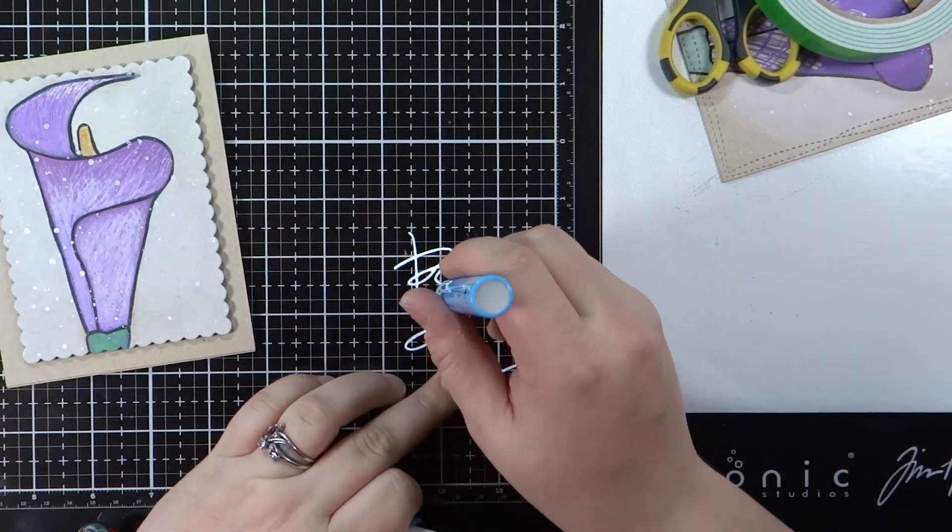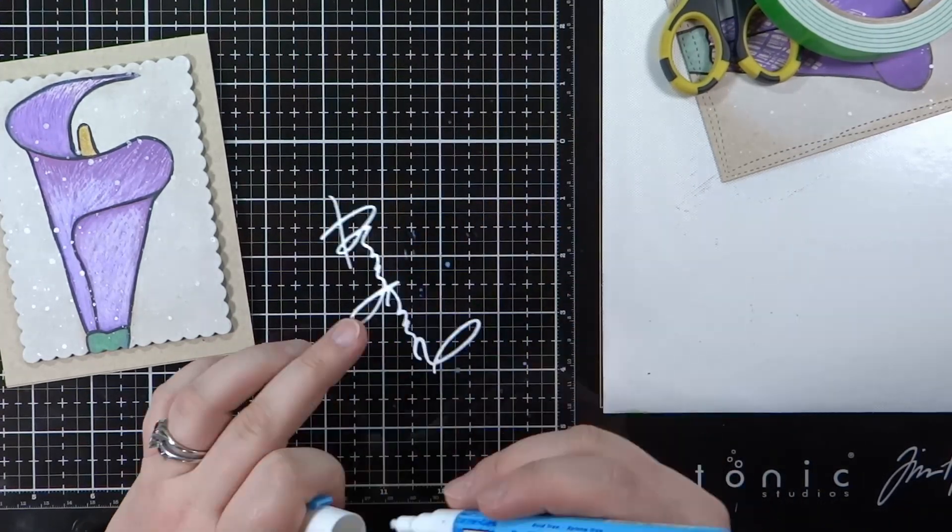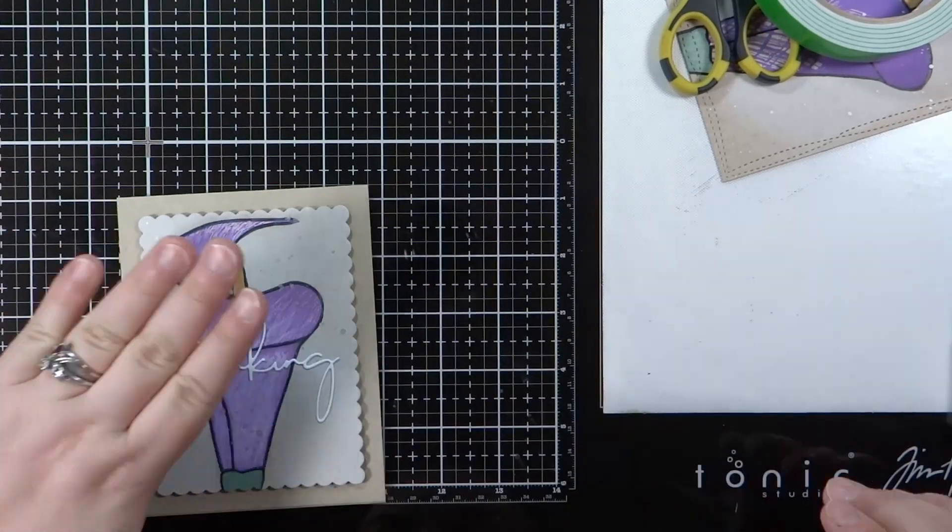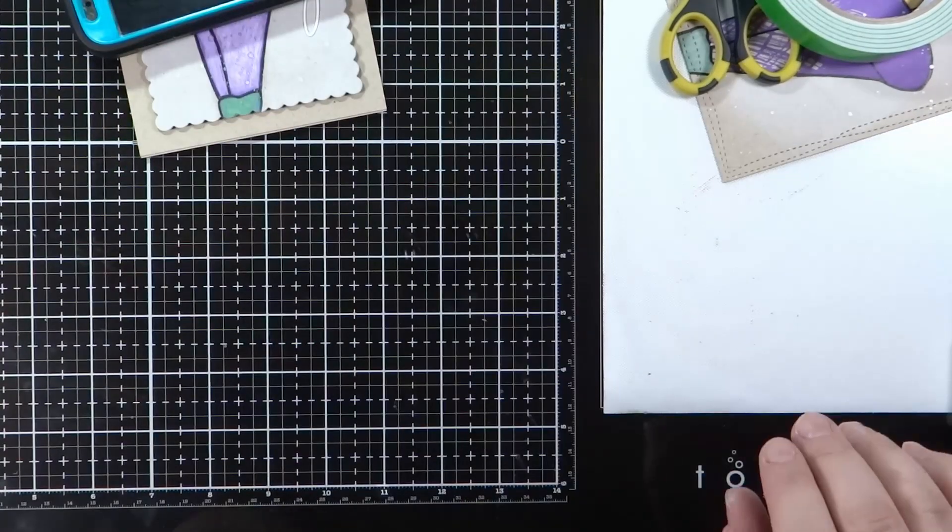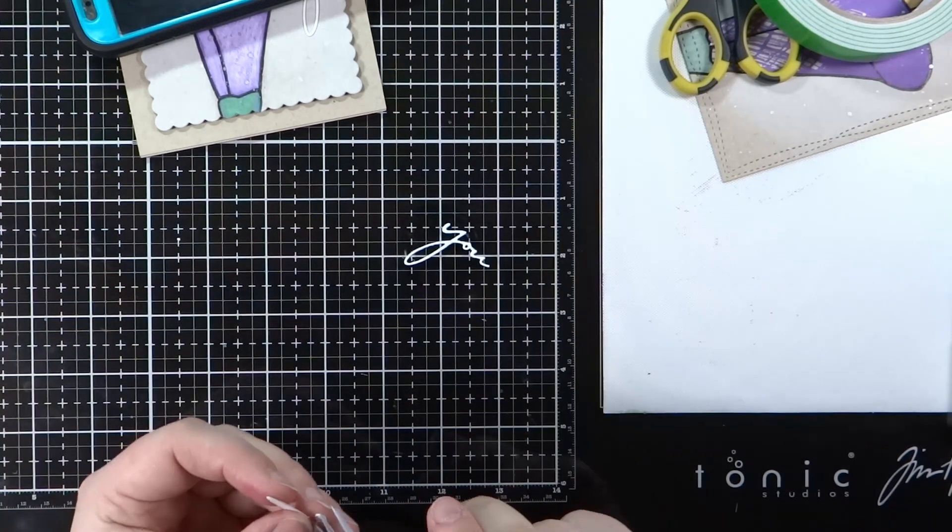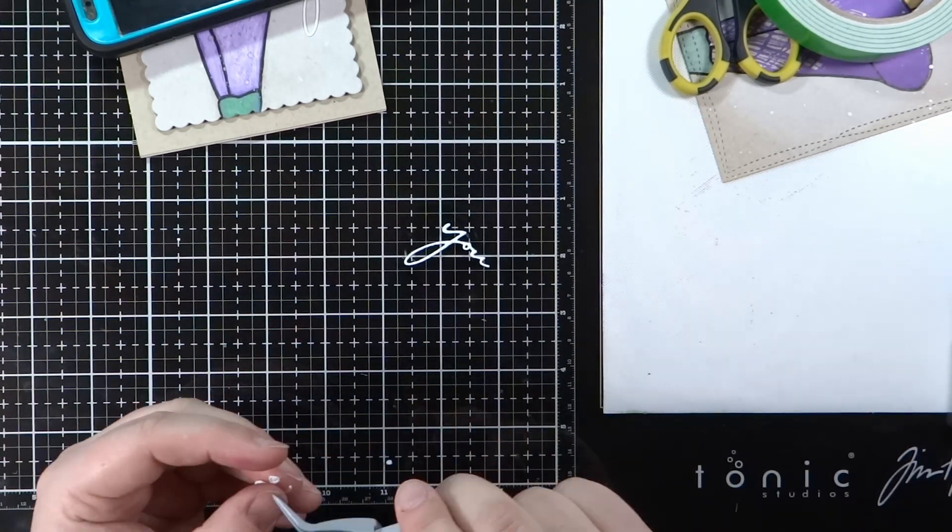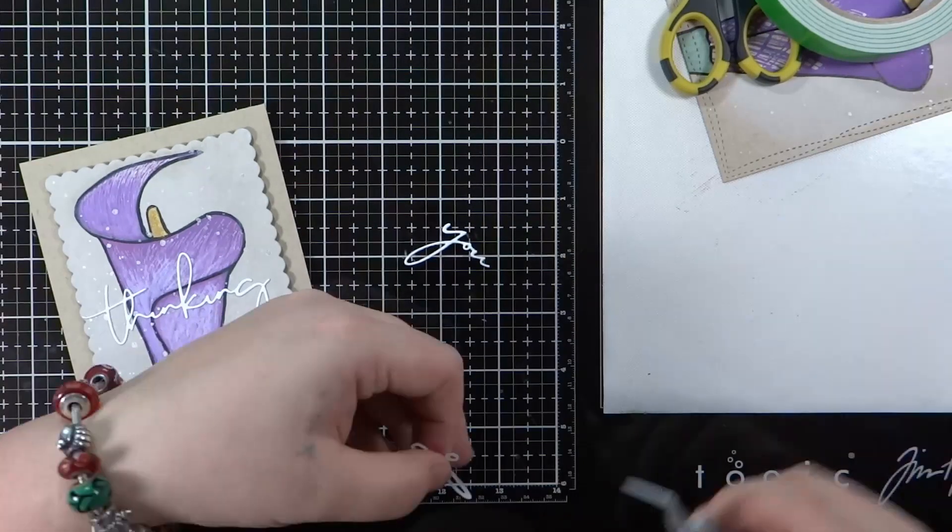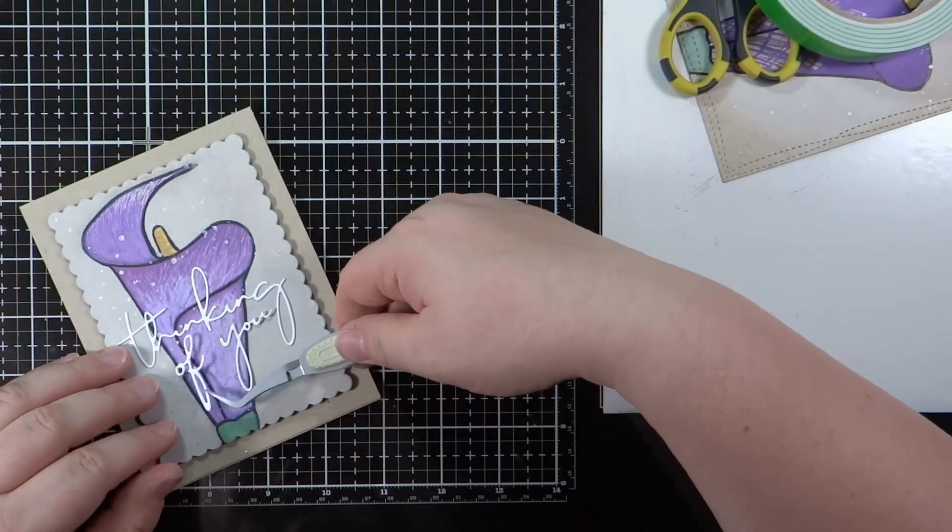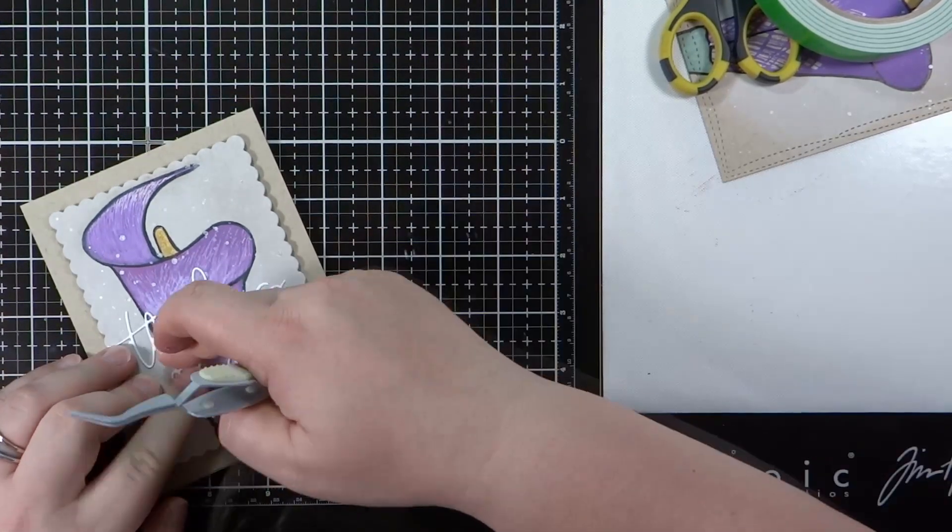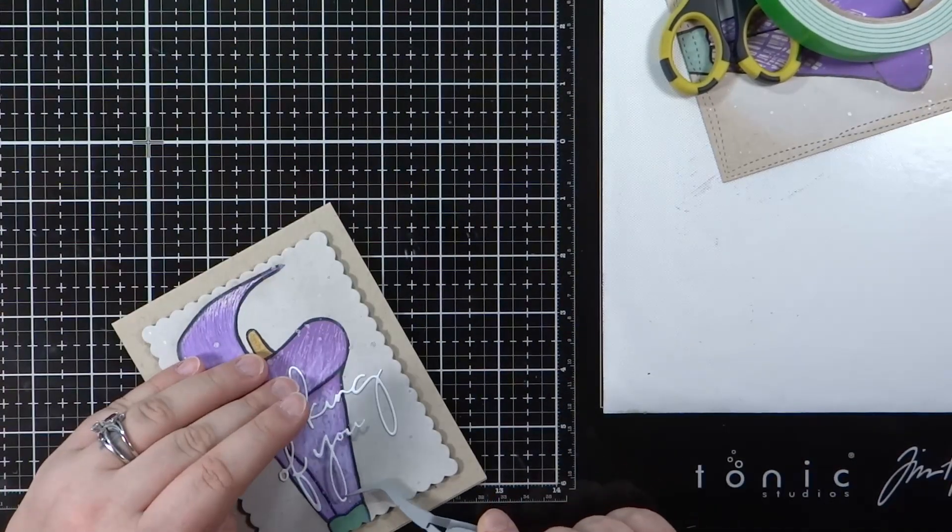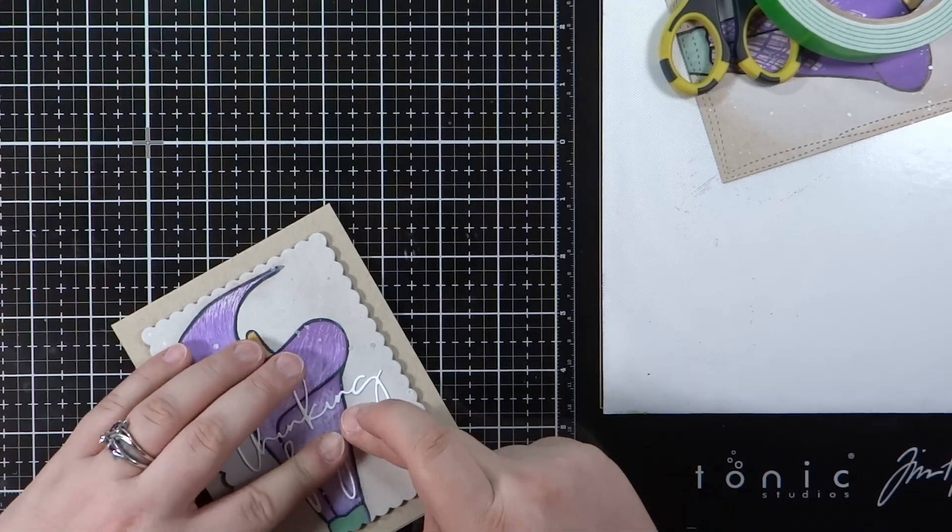Now going back to the scalloped rectangle one, I'm adding that flower layer on onto a Neenah Desert Storm card base. I also used a Concord and Ninth sentiment die for this one. This one is part of the painted rose set and it says thinking of you. I didn't have an acrylic block handy so I just used my phone to hold that down. I'm not going to worry about the dots for the eyes in the thinking word. They're so small and there's a lot of white splatter on this piece anyways that I figured it would just kind of blend in and nobody would really see it. So I left that out.